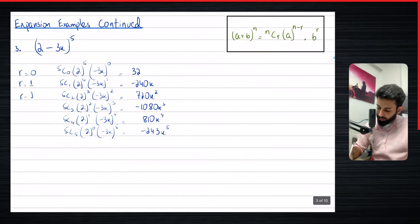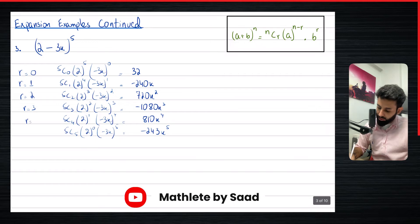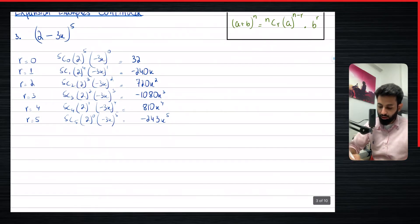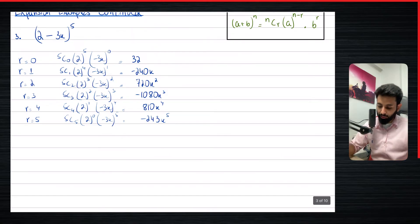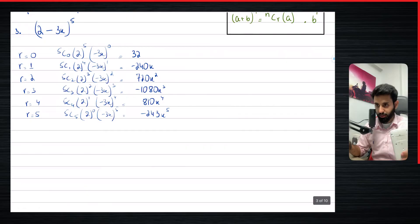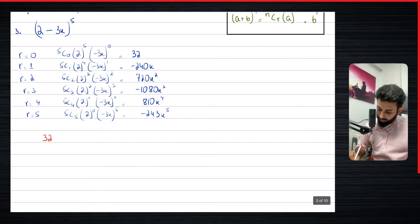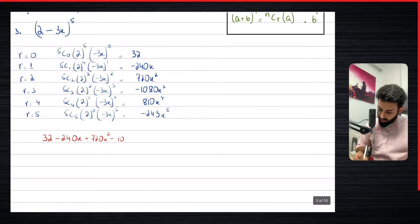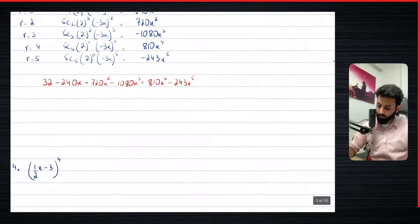One thing I want you to observe as I write down the answer — and this is going to come in handy in the next couple of videos — observe what the power on x is and compare it with the value of r. Let me know what you think in the comment section, because this is what we're going to be using in the next couple of videos. So the final answer is: 32 minus 240x plus 720x squared minus 1080x cubed plus 810x to the power four minus 243x to the power five.